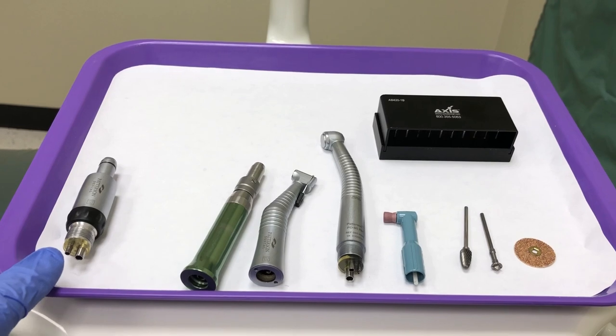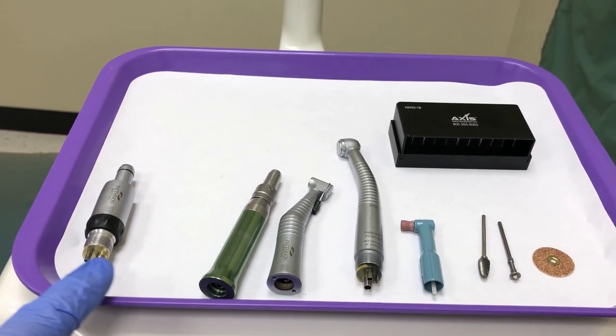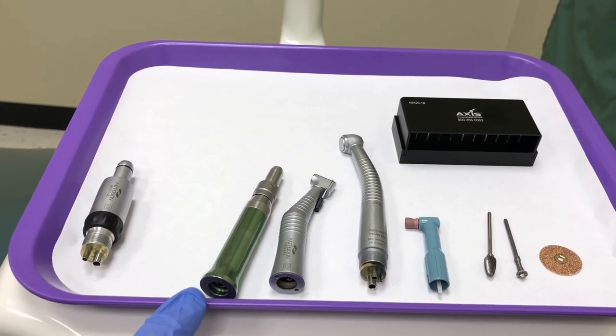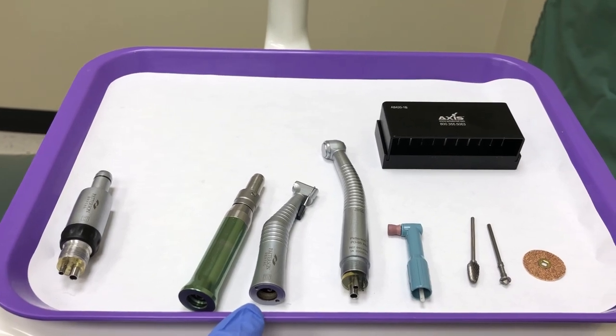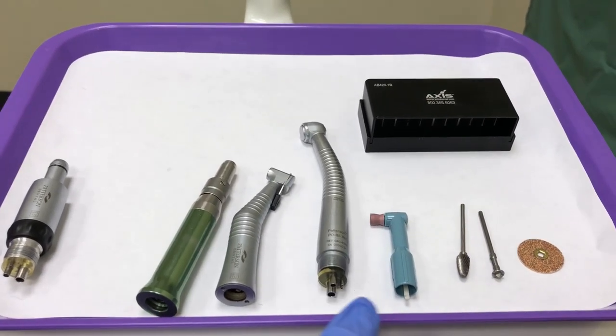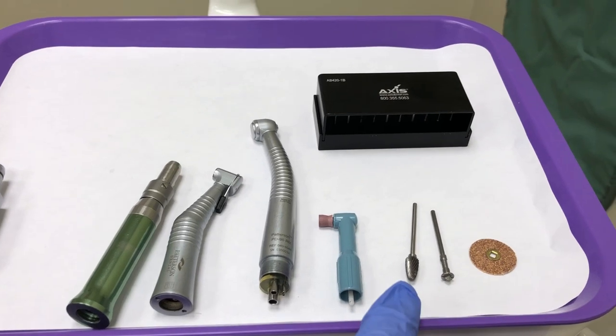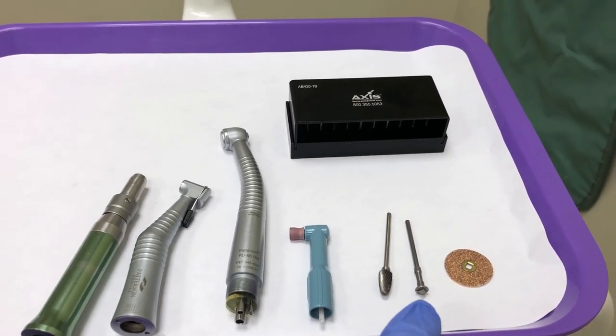On your tray, you have a low-speed motor, a straight attachment, a contra angle, a high-speed handpiece, a prophy angle, a laboratory burr, a mandrel, and a disc.